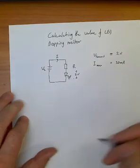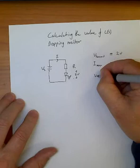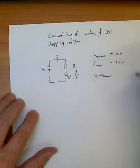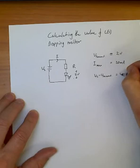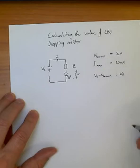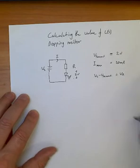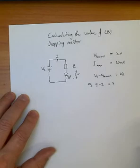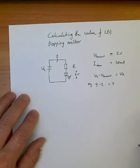So to generalize that a little bit, Vs minus V forward is equal to the voltage across my resistor VR. So for example, 9 minus 2 equals 7. So the voltage across my resistor is 7 volts.